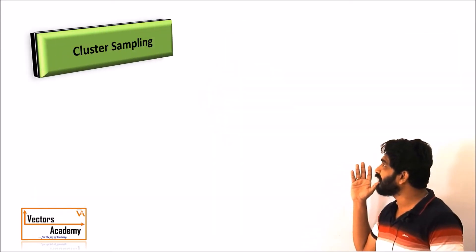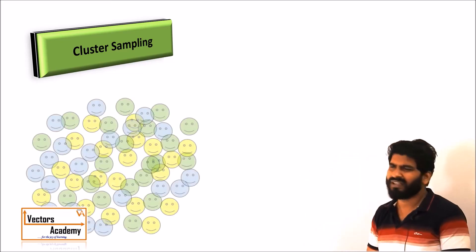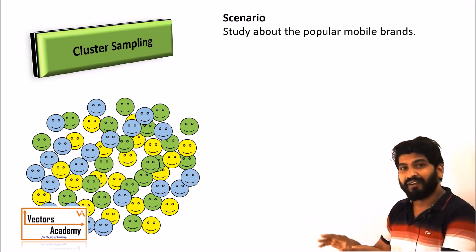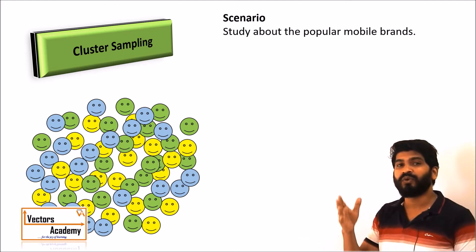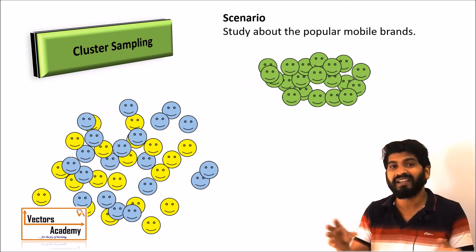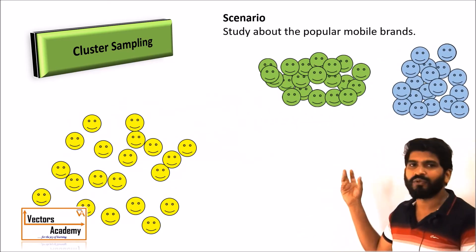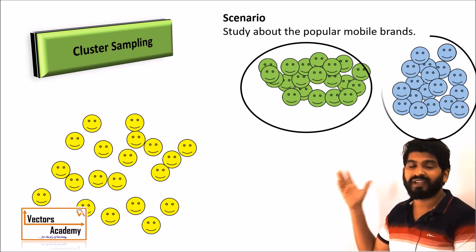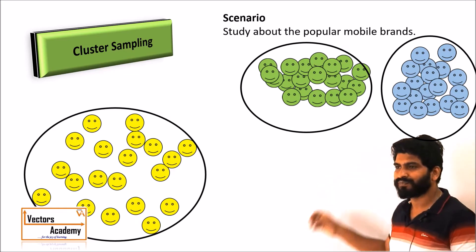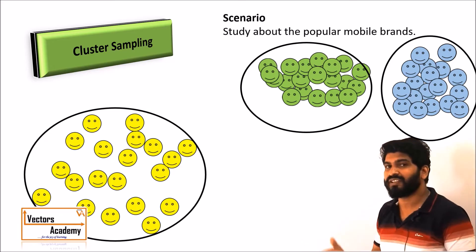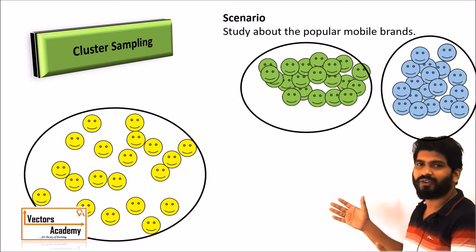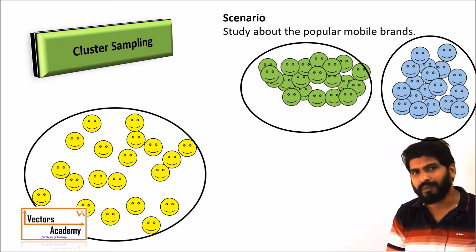The next type is cluster sampling, which has some similarities with stratified sampling. The population is divided into different groups called clusters. For example, to study the popularity of different mobile brands, we divide the population into parts and select samples from each cluster. Samples are selected from each cluster based on the number of people it includes. These are the four different types of probability sampling.